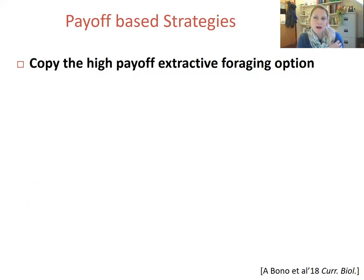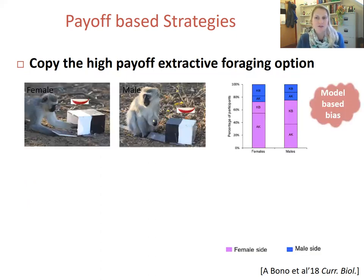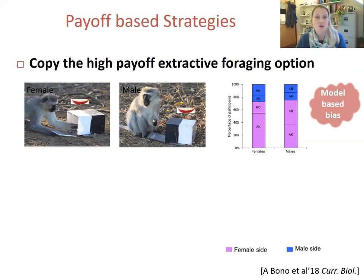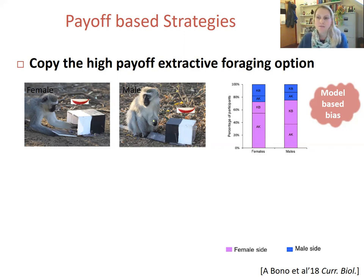We also have evidence for use of this payoff bias in a study of wild vervet monkeys, where the dominant male and female of each group are trained to open a puzzle box to retrieve food. The researchers had already established that when payoffs are equal — the female gains one apple piece opening the white door, and the male gains one apple piece opening the black door — there is a bias for everyone, male or female, to copy the dominant female in the group rather than the dominant male. This is presumed to be because in vervet monkeys the male disperses, so females are the philopatric sex and can be assumed to have superior ecological information — a context-dependent model-based bias.